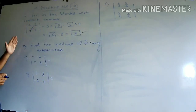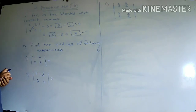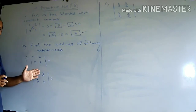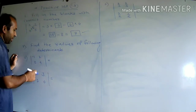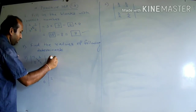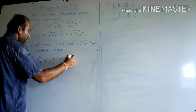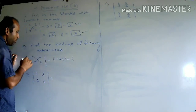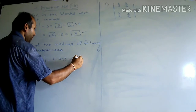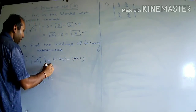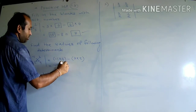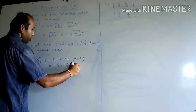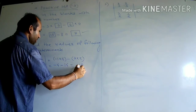Question 2: find the value of the following determinants. Take the product of diagonal elements minus product of non-diagonal elements: minus 1 into 4 minus 7 into 2. That gives minus 4 minus 14, which equals minus 18.